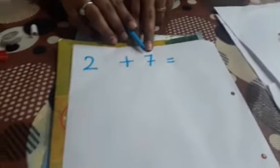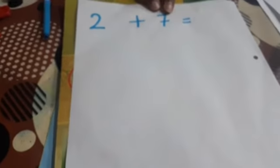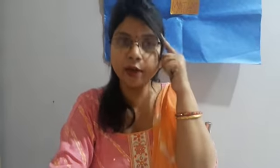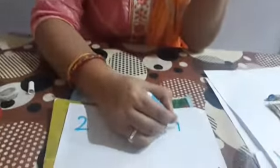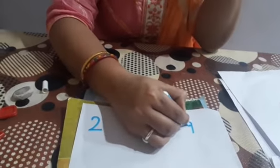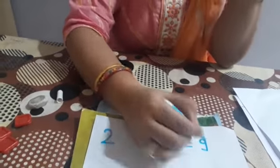We will start from the biggest number — seven. Count in your mind: seven. Keep seven in your mind. And what is the next number? Two. So now we will start after seven, counting two more numbers: eight, nine. So what is the answer? The answer is nine.